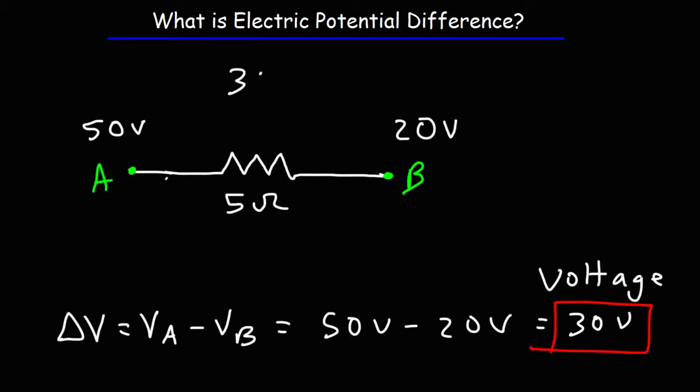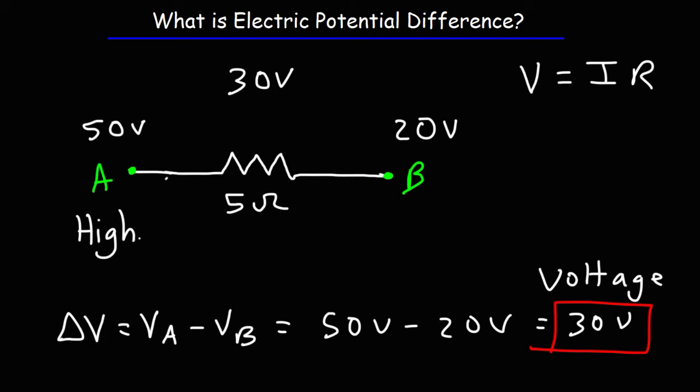So in this example, we have a voltage of 30 volts across this resistor. Once we know the voltage, we could use Ohm's law to calculate the current, which is V equals IR. But here's a question: in what direction will the current flow — from point A to point B, or point B to point A? Conventional current always flows from a high electric potential to a low electric potential. So the potential at A is higher than at B, meaning electric current is going to flow from point A to point B.